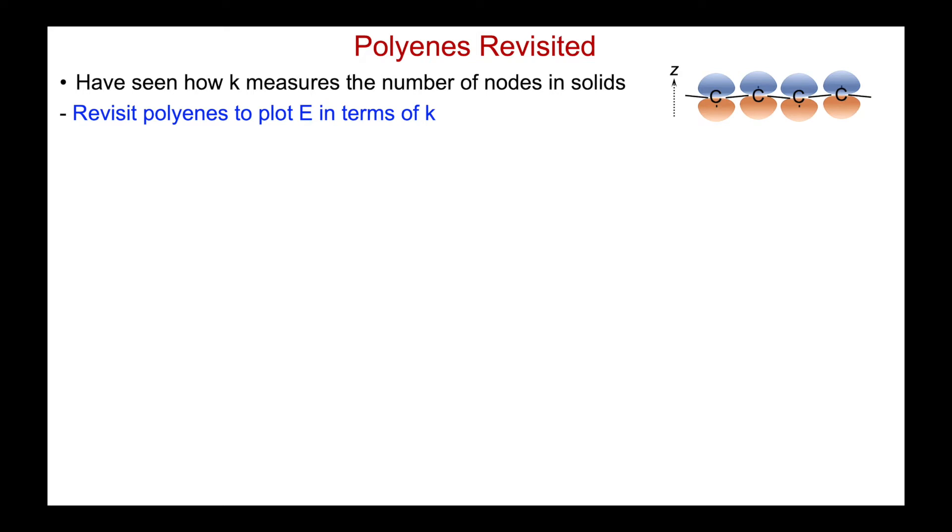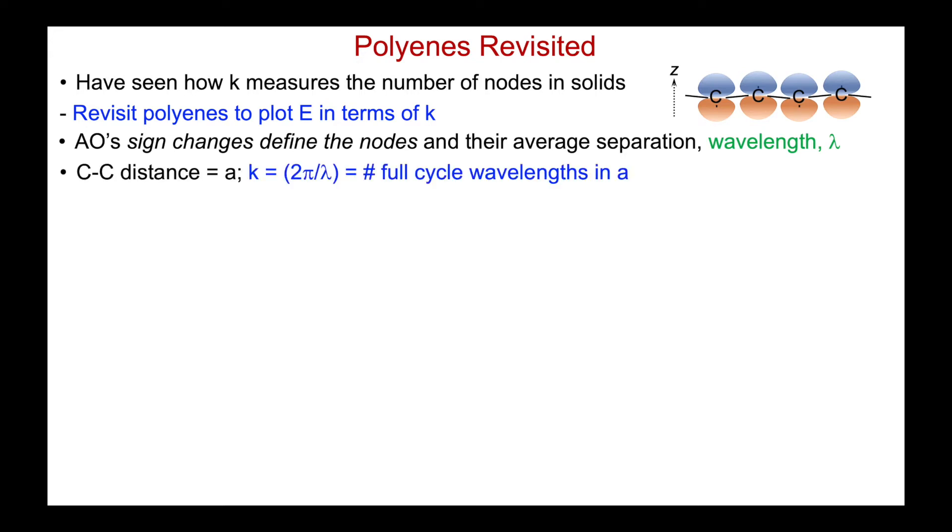Now that we have some feeling for how K measures the number of nodes in solids, although we've just done our 1D solids to this point, let's quickly revisit the polyenes to see if now we can use this concept of K to plot the energy for those systems in terms of their K vector. We know the sign changes of the atomic orbitals define the nodes and their average separation, and therefore the wavelength lambda. We'll define our carbon-carbon distance here as A, and remember then that K is equal to 2π over lambda, and it's the number of full cycle wavelengths of our nodal repeat within one atom-atom separation.